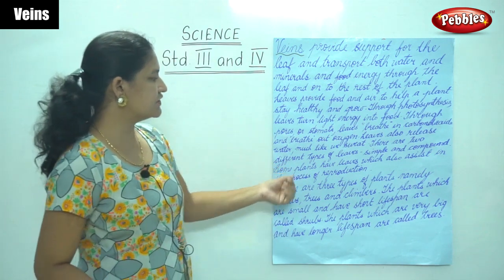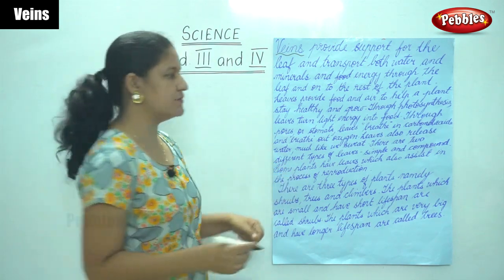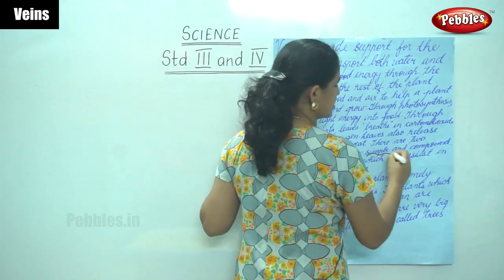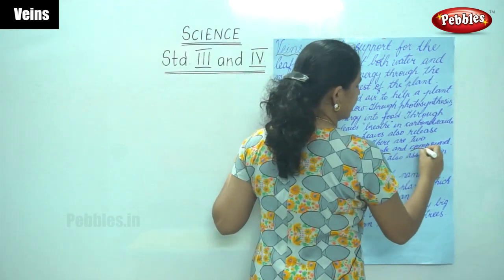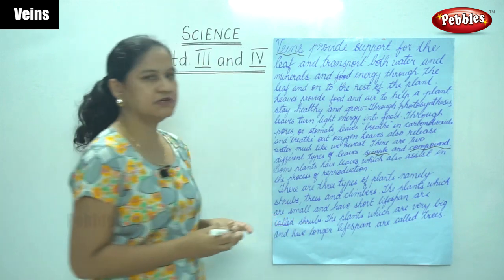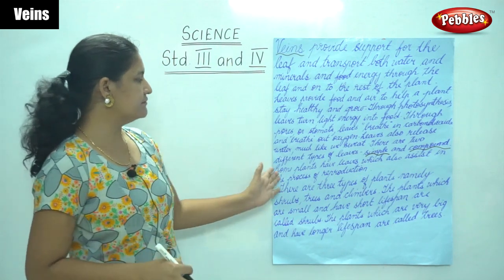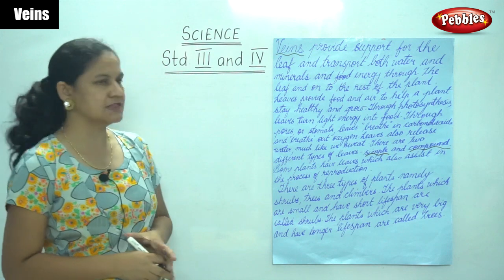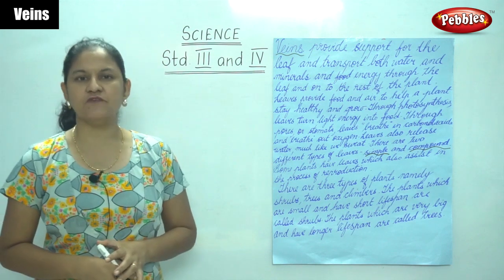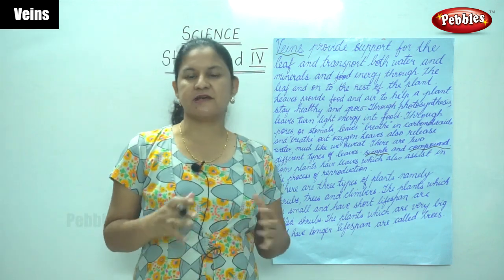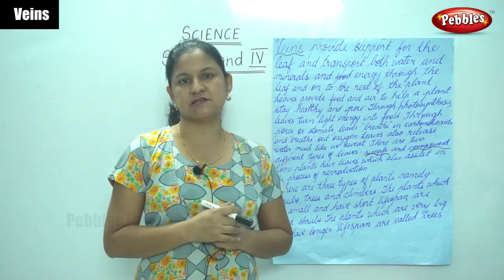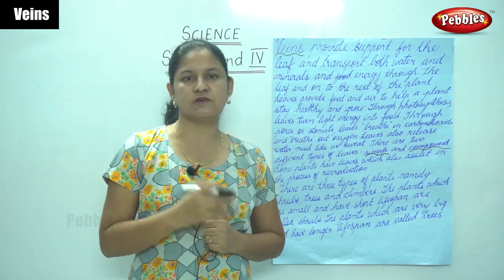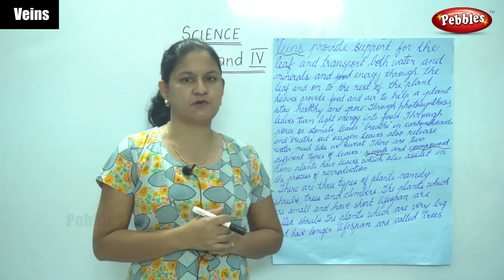There are two different types of leaves: simple and compound leaves. Some plants have leaves which also assist in the process of reproduction. So where some plants are concerned, leaves not only prepare food but also help in the process of reproduction.